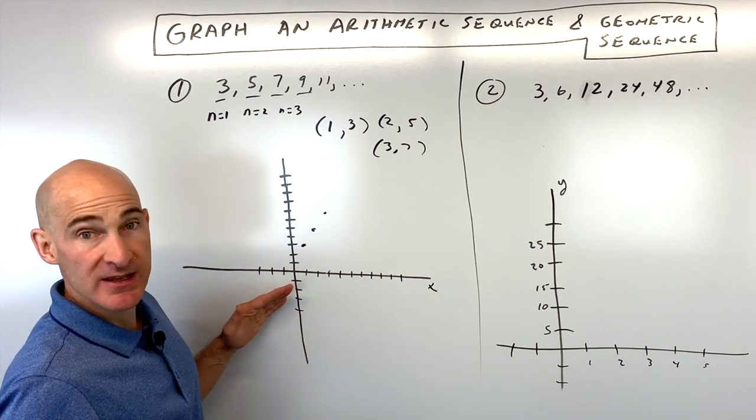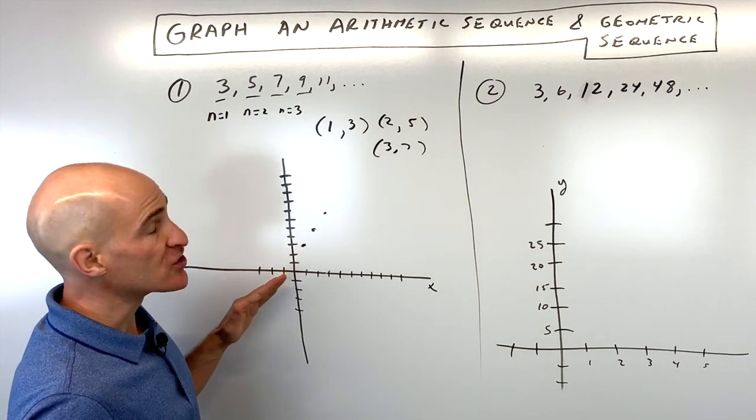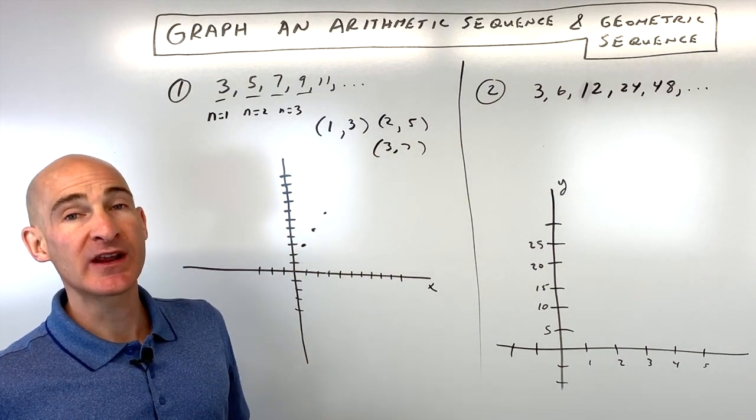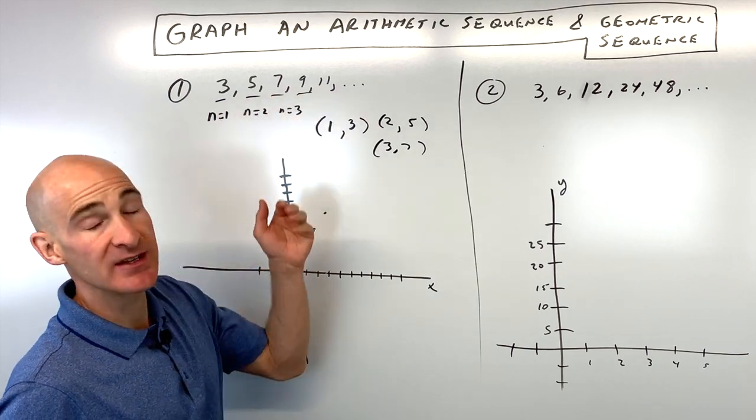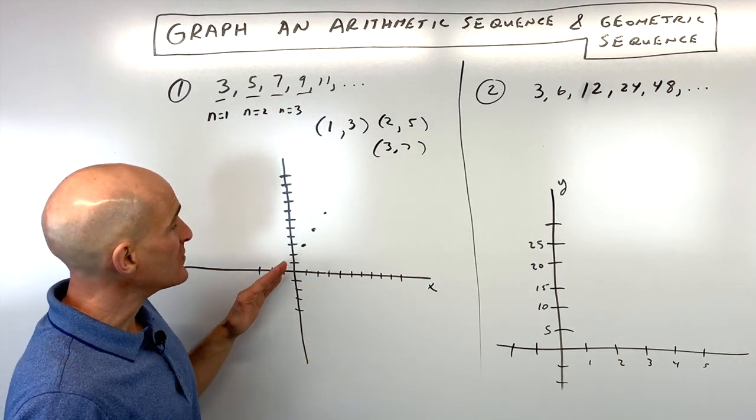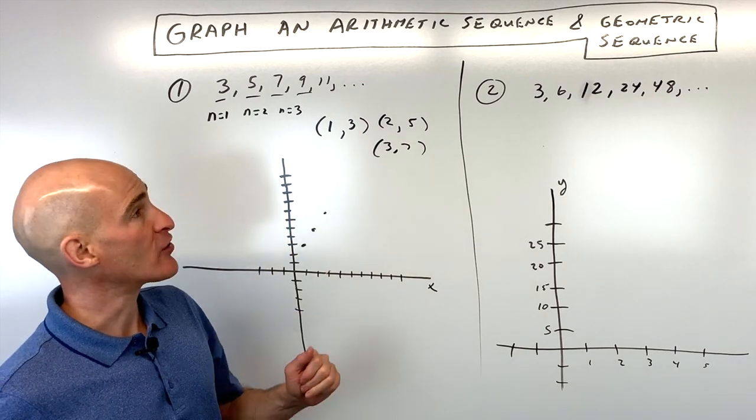And what you can see here is that it's going up in a straight line, and that's what arithmetic sequences are. Since they're increasing, adding the same amount each time, it's going to be linear. So that's the key with arithmetic.